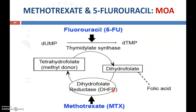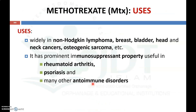Folic acid is converted to dihydrofolic acid, and dihydrofolate reductase converts this to tetrahydrofolic acid. Methotrexate inhibits this enzyme, preventing the conversion of dihydrofolate to tetrahydrofolate. 5-Fluorouracil inhibits the enzyme thymidylate synthetase, which is responsible for the conversion of tetrahydrofolic acid to dihydrofolic acid using UMP to TMP (thymine monophosphate). So 5-fluorouracil acts at thymidylate synthetase, while methotrexate acts at dihydrofolate reductase.